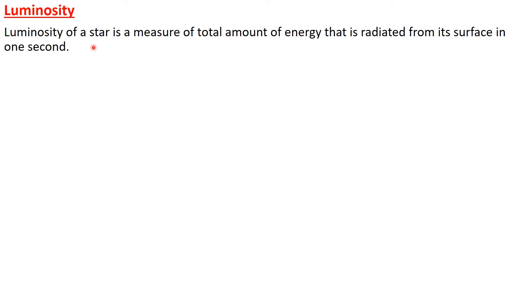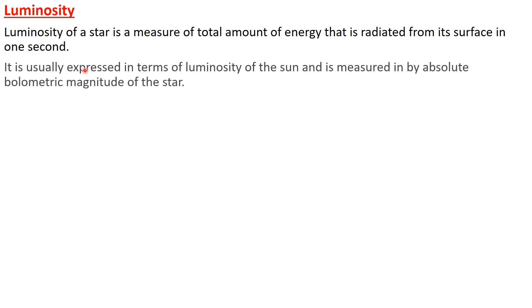Now let's discuss luminosity. The luminosity of a star is a measure of the total amount of energy radiated from its surface in one second. It is usually expressed in terms of the luminosity of the Sun and is measured by the absolute bolometric magnitude of the star.